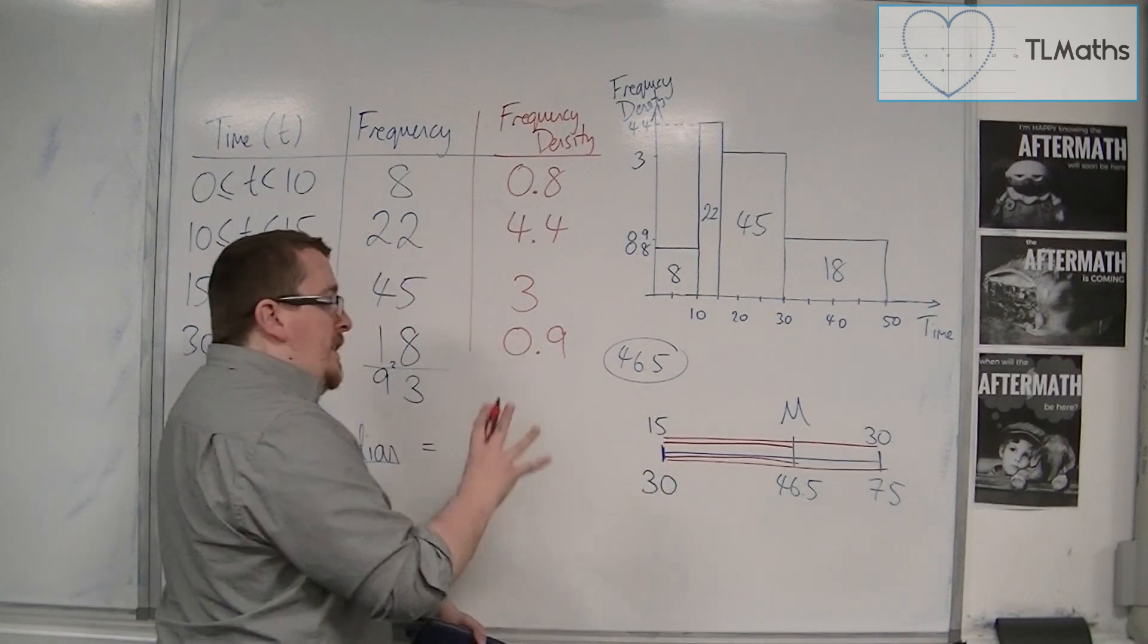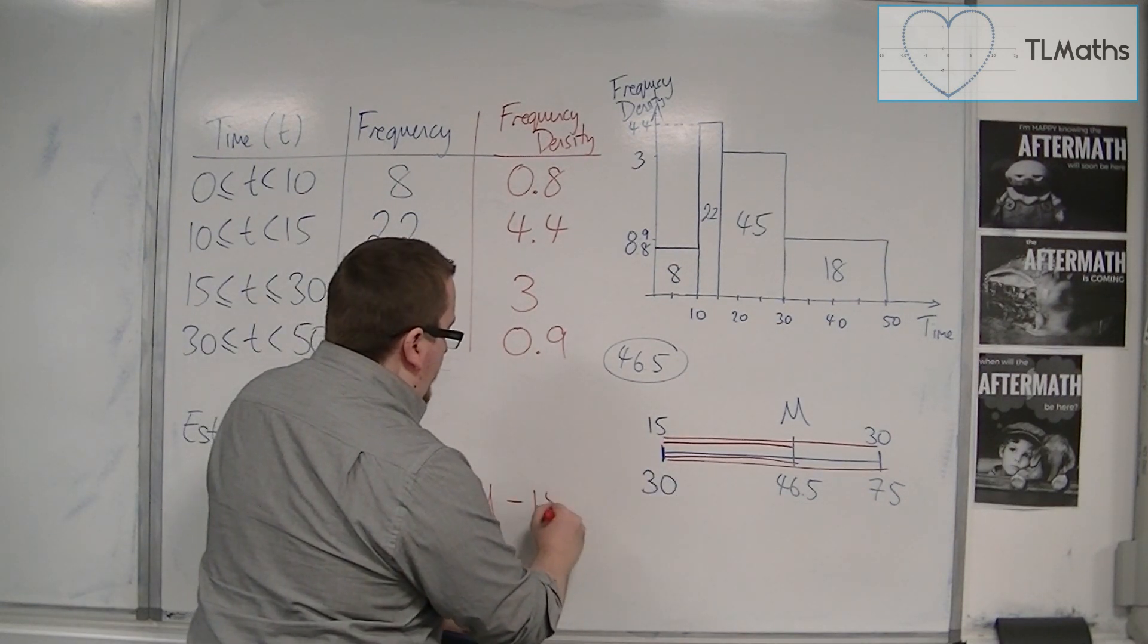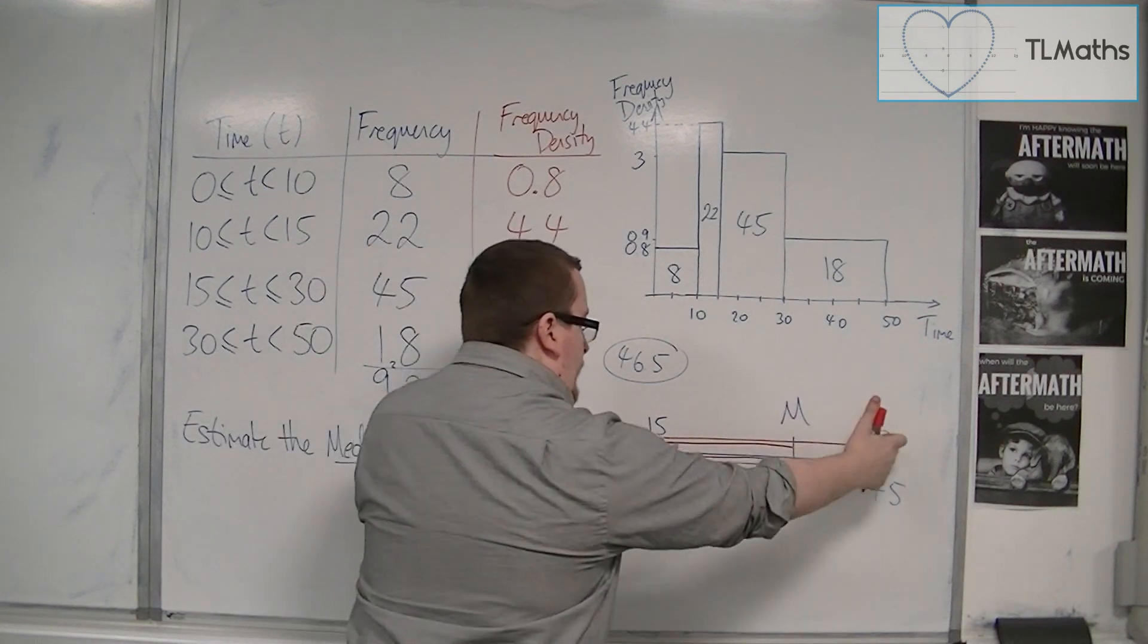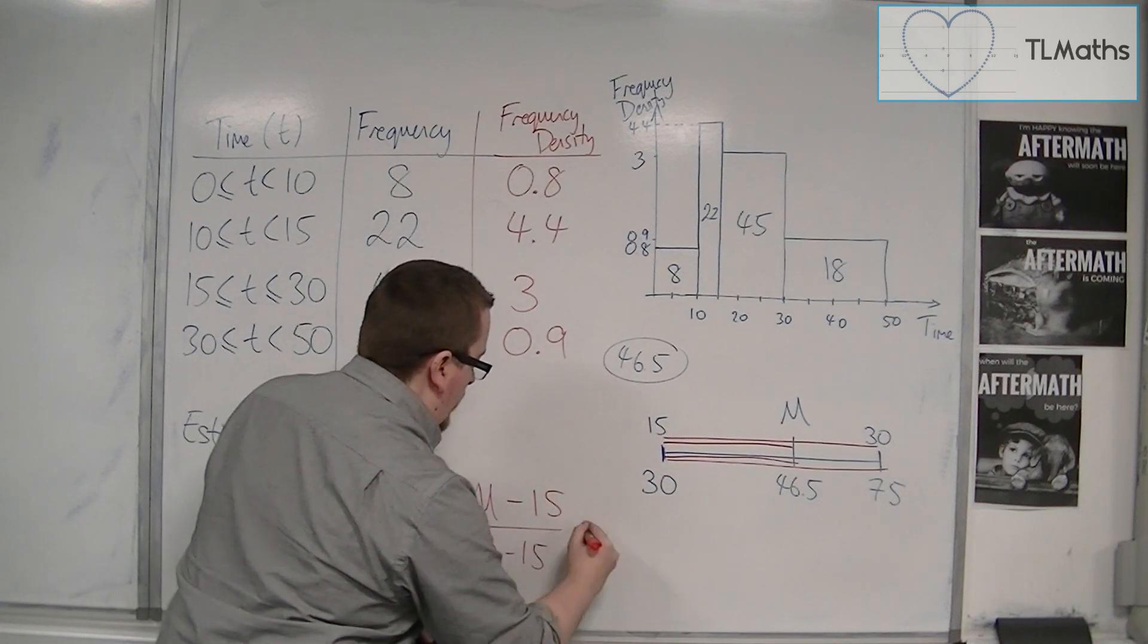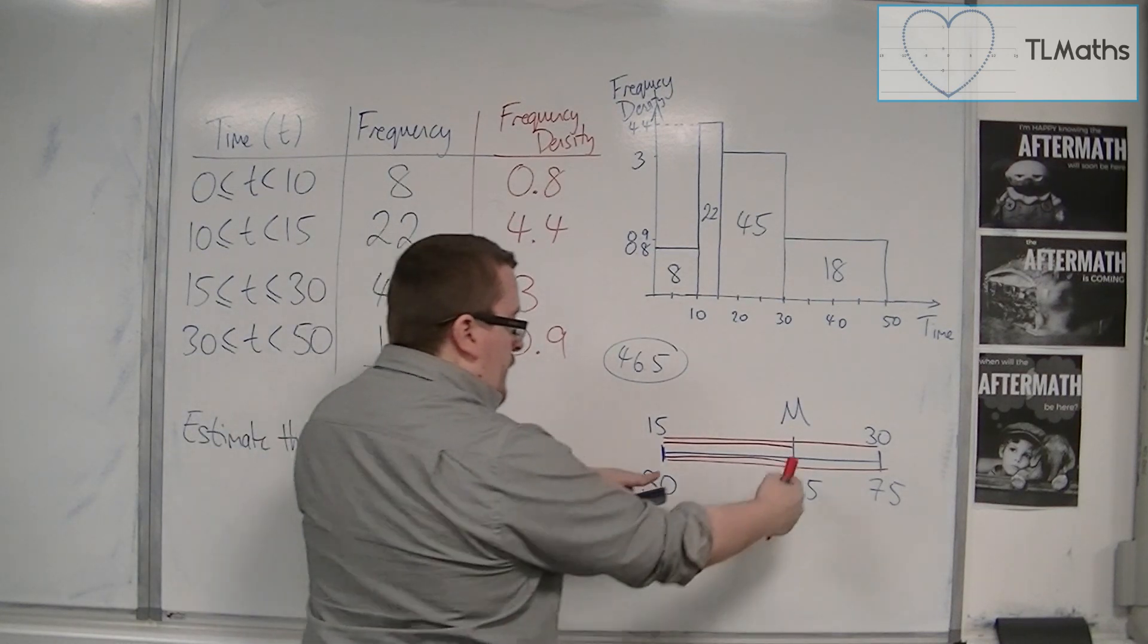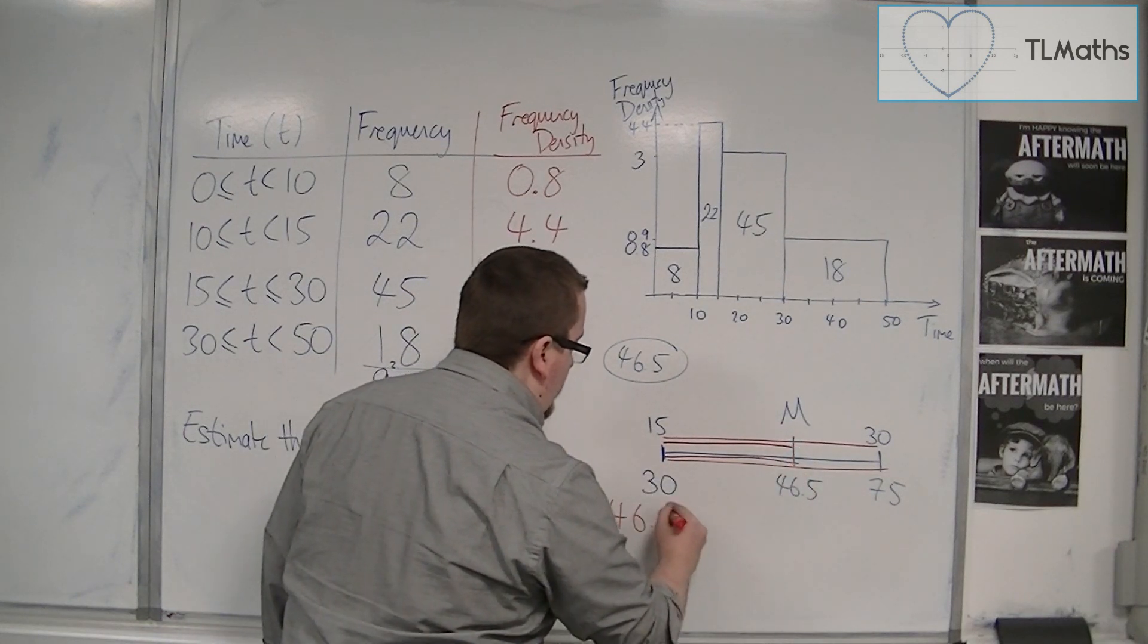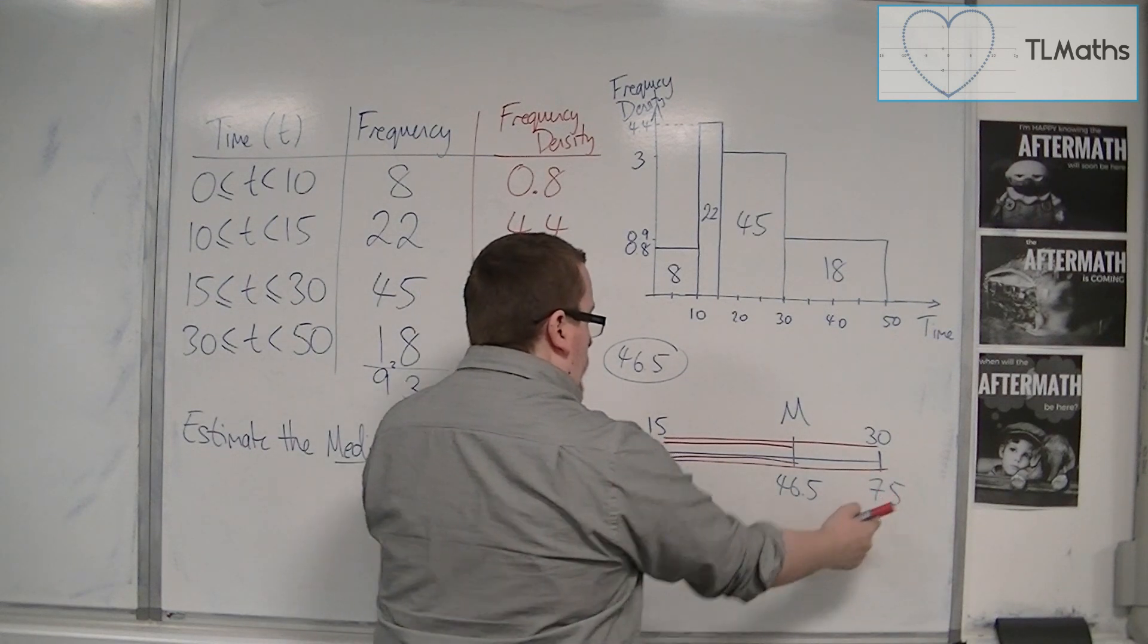So what we can do is we can write it as M take away 15. So that distance over the total distance, 30 take away 15, is equal to 46.5 over 30, 46.5 take away 30, over 75 take away 30.